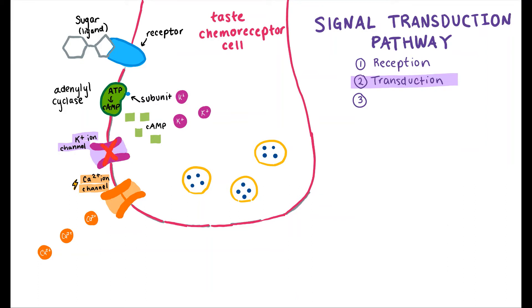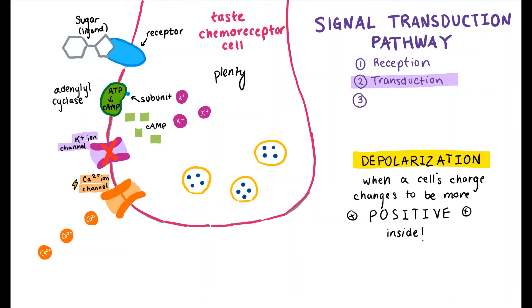This blockage causes what is known as depolarization. There is now plenty of positive charge inside the cell, so the charge-dependent calcium ion channel can open up, and calcium ions flood the cell. The ions act like an escort for these little bubbles called vesicles, filled with tiny messengers called neurotransmitters.